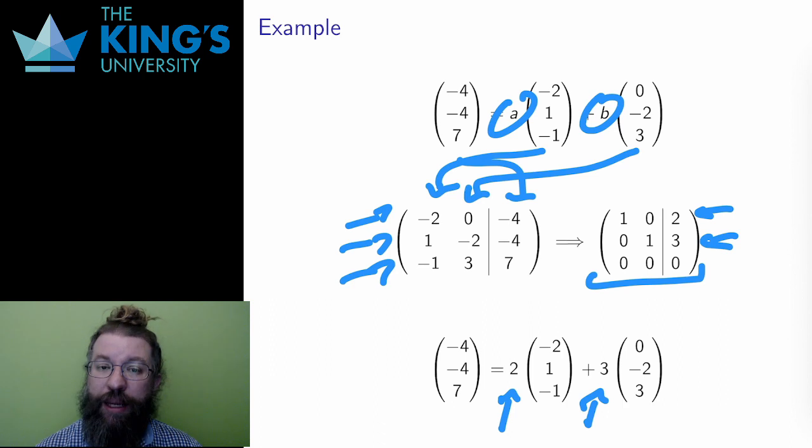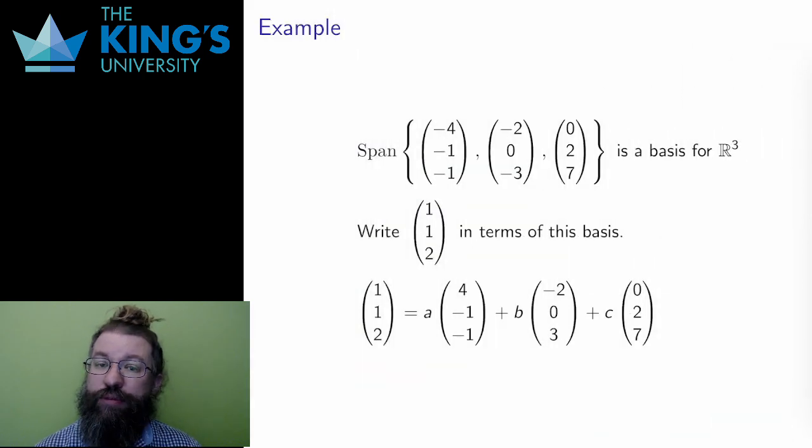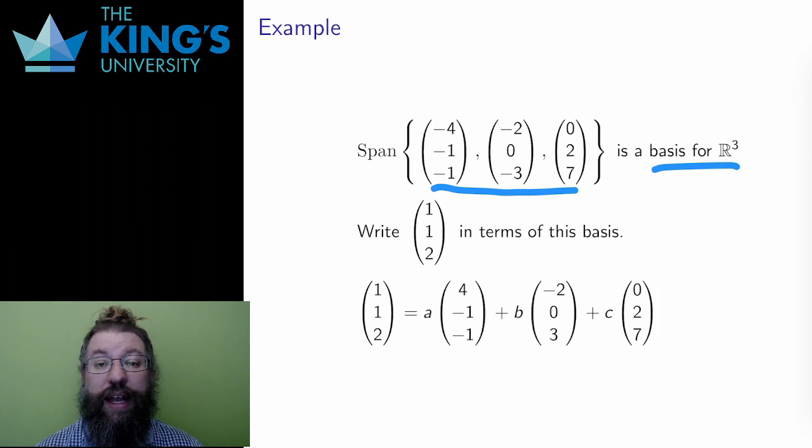Let me do another example. This is a basis for R3, since these three vectors are linearly independent. And I could check this with the last video's algorithm, putting them into a matrix as rows and counting the leading ones. And I would get three leading ones showing their linear independence. These three vectors span all of R3, so any vector in R3 can be written uniquely as a linear combination. I want to describe the vector (1, 1, 2) in terms of this basis.